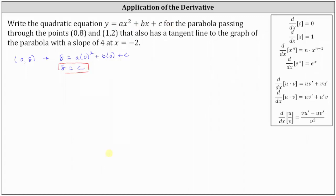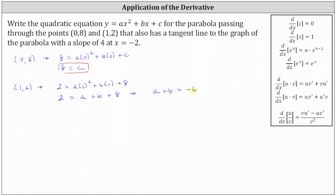For the second point (1,2), we substitute 2 for y and 1 for x, which gives us 2 equals a times 1 squared plus b times 1 plus c. Since c equals 8, we write plus 8. Simplifying, we have 2 equals a plus b plus 8. Subtracting 8 from both sides gives us a plus b equals negative 6.